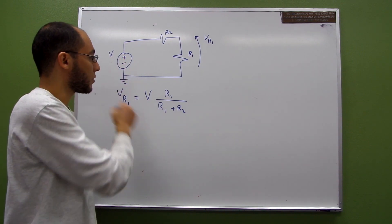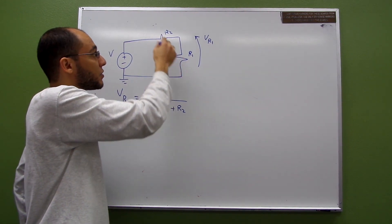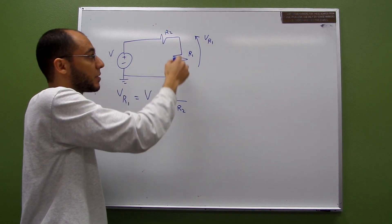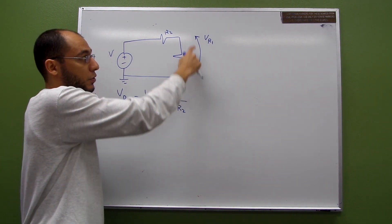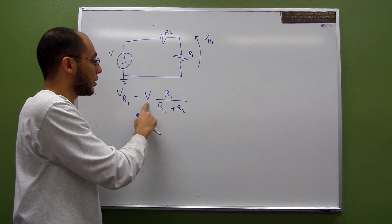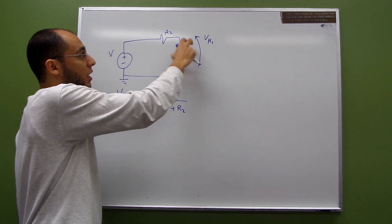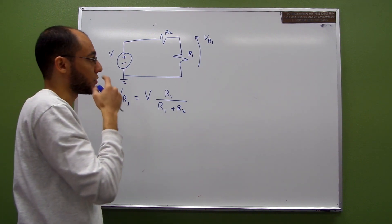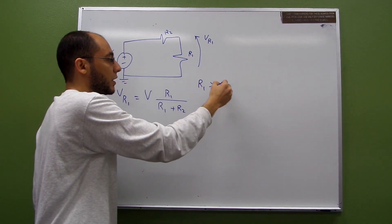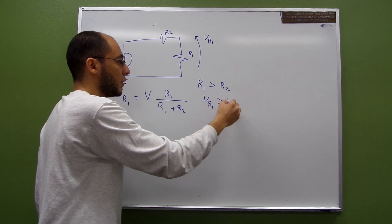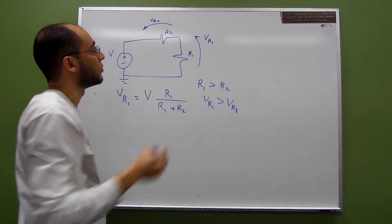What does this equation say? If you have a voltage source supplying two resistors that are in series — so the current passing through the first is the same as through the second — then the voltage of the first resistor equals the source voltage multiplied by the ratio of R1 to the total resistance. If R1 is greater than R2, you expect V_R1 to be greater than V_R2.